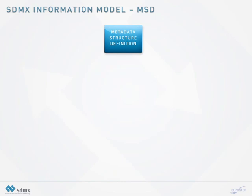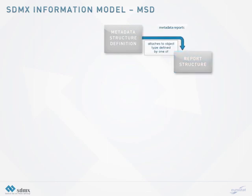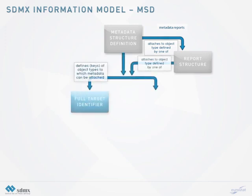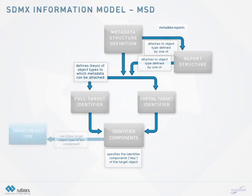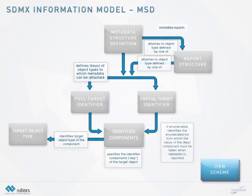The metadata structure definition defines the target objects to which metadata attributes defined in a report structure can be attached. There are two types of target identifiers: full and partial. Both target identifiers consist of individual identifier components. An identifier component must have an association to an object type, which must be one of the formally recognized object classes from the information model, for example a category.